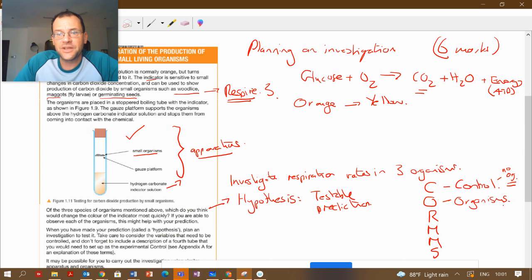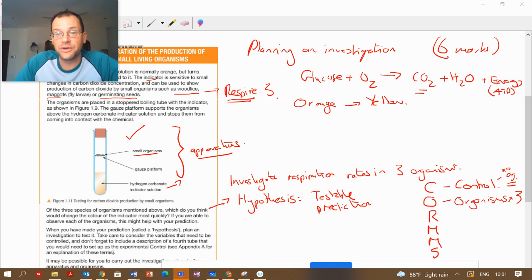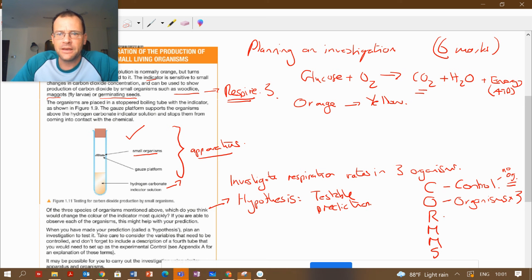O is for organisms. We have three types of organisms here: we've got the wood lice, we've got the maggots, we've got germinating seeds. That's what we're comparing. Now when we're doing the experiment...